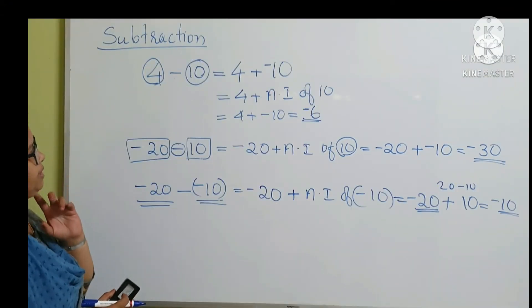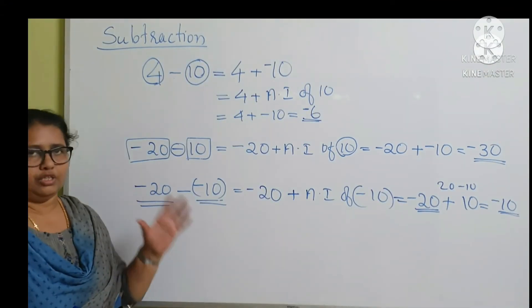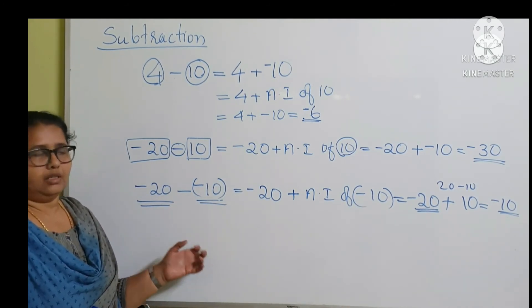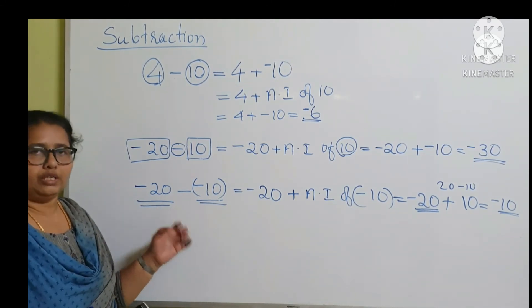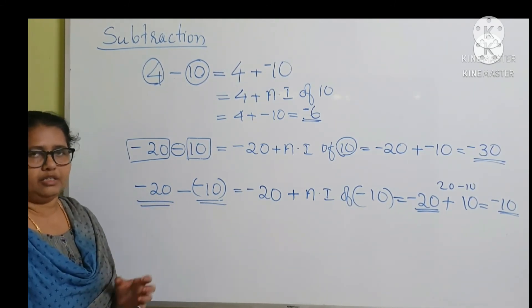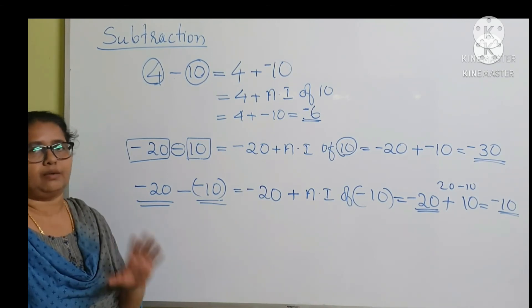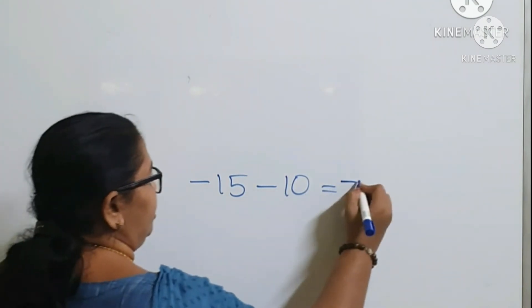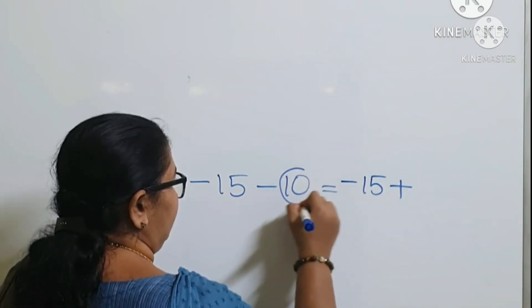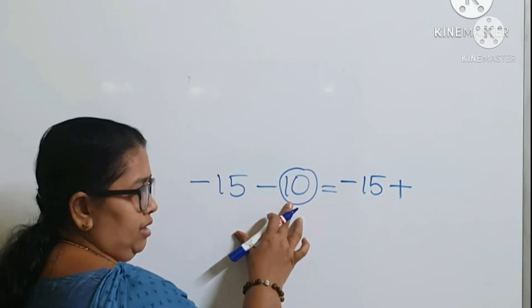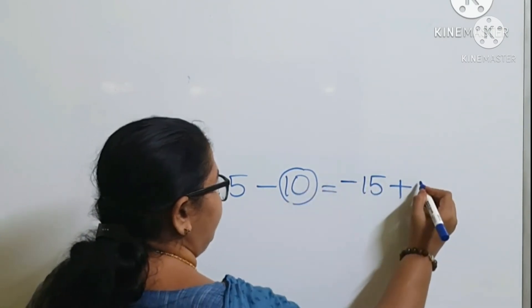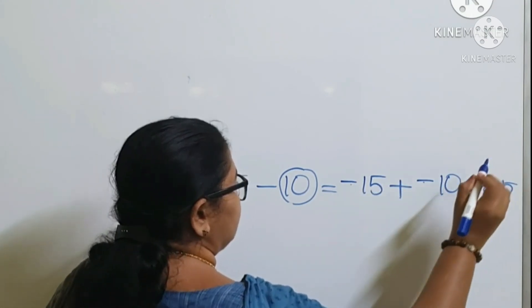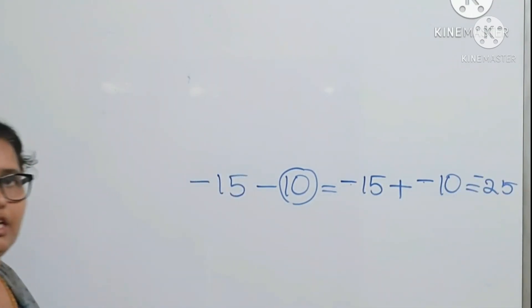So like this, we can subtract integers. The rule is: to subtract two integers, we add the additive inverse of the integer which is to be subtracted. For example, minus 15 minus 10 becomes minus 15 plus additive inverse of 10, which is minus 15 plus minus 10. Both are negative integers, so we add them and place the same sign, giving minus 25.